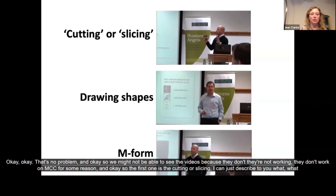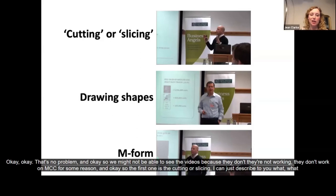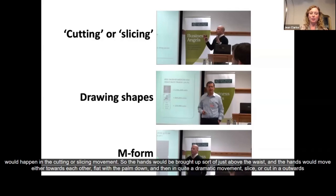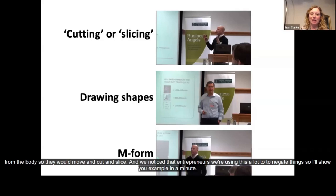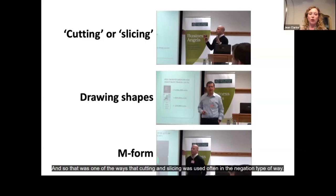The first is cutting or slicing. The hands are brought up just above the waist and move towards each other flat with the palm down, then in quite a dramatic movement slice outwards from the body. We noticed that entrepreneurs were using this a lot to negate things — for example, 'this is not going to be a problem for you,' using the cutting or slicing movement as if to cut the problem away.